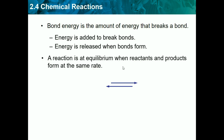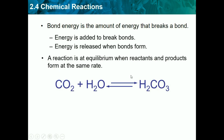A reaction is at equilibrium when reactants and products form at the same rate. So if CO2 plus H2O yields H2CO3 at the same rate as H2CO3 yields H2O plus CO2, this is at equilibrium. But if CO2 plus H2O yields H2CO3 faster than it can do it backwards, then it won't be at equilibrium.